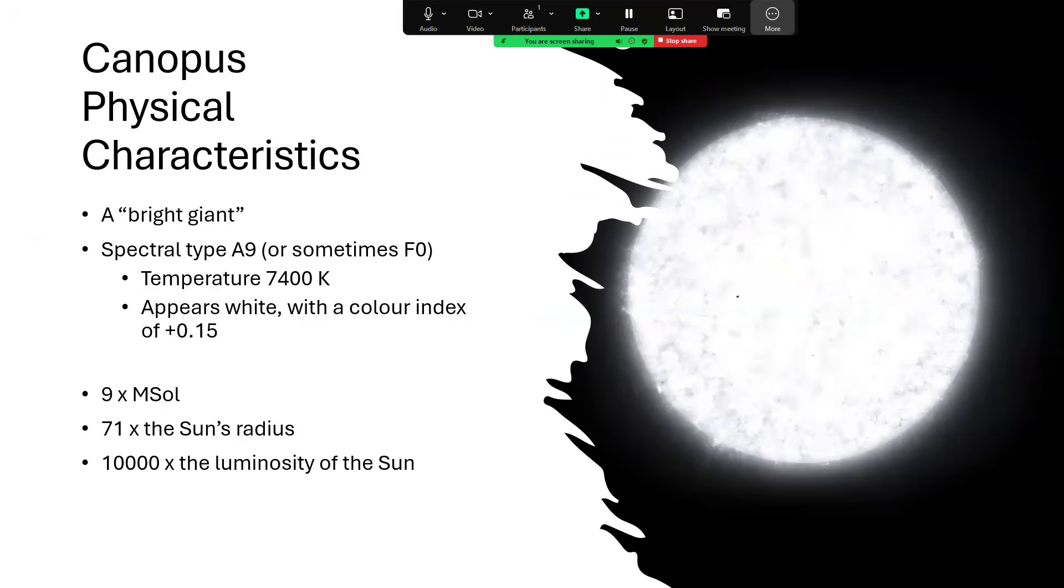Physically, it's a bright giant. It's an interesting class of stars. When you first study astronomy, they tell you about ordinary stars, main sequence stars, and then they talk about red giants, white dwarfs, and red dwarfs, and so on. But the more you dig into it, the more you find the classification system has quite a lot of caveats and subclasses.